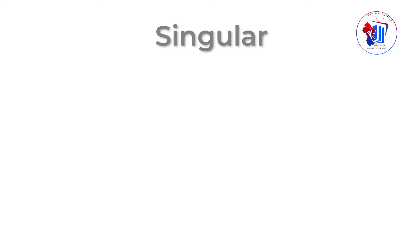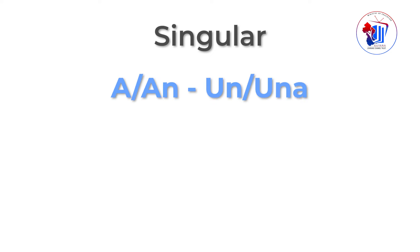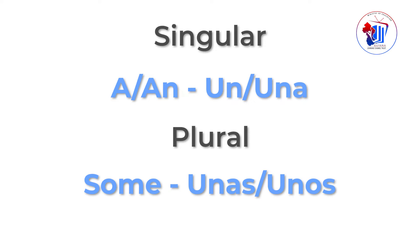Ahora veamos qué son y cuándo usar los artículos indefinidos en inglés. Existen tres artículos indefinidos en inglés. Dos de ellos son para una forma singular: A y AN, lo que significa un y una en español. Y uno es para usarse cuando nos referimos a la forma plural, y esa palabra es SOME, lo que significa unas y unos.